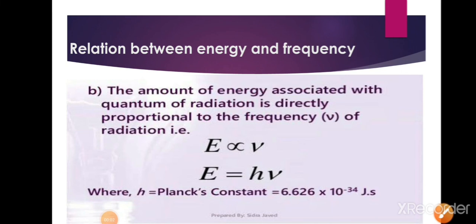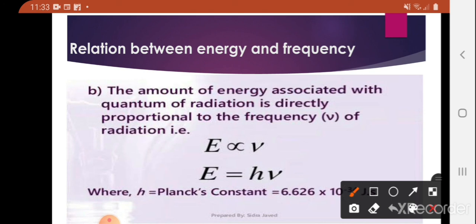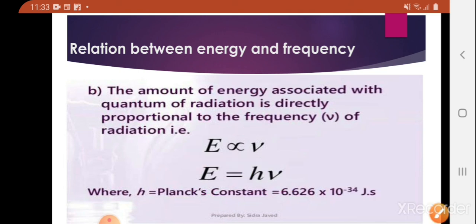Planck also gave the relation for the energy of a quantum of radiation and its frequency. Frequency is represented as ν, and the relation is written as E = hν. Energy is directly proportional to frequency. The constant h is known as Planck's constant. The value for Planck's constant is 6.626 × 10^-34 joule seconds. With this theory, Planck was able to explain the wavelength and intensity relation.